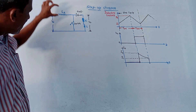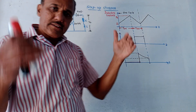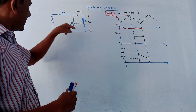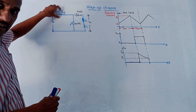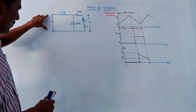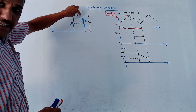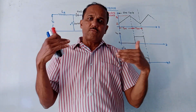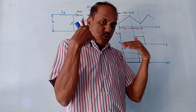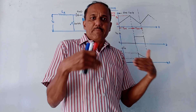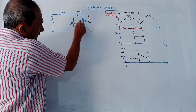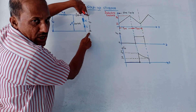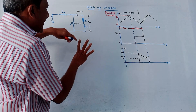This is the corresponding circuit diagram. Ls is a large inductor placed in series with the circuit. Vs is the supply voltage. FWD is the freewheeling diode. This is the chopper switch, which can be an IGBT or MOSFET. This is the RL load, and we measure the output voltage across this RL load.